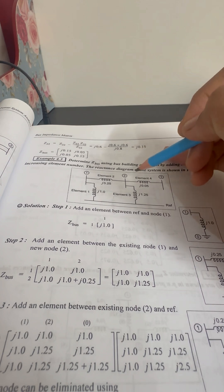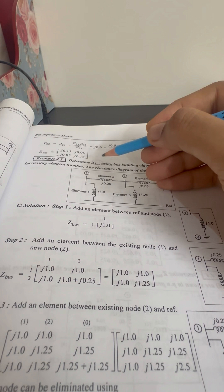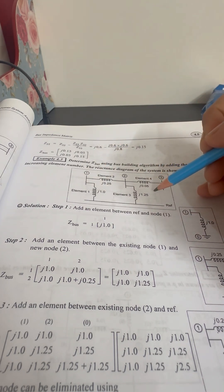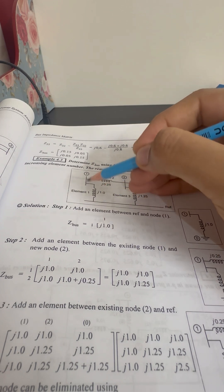This is very easy. In the Bus Building algorithm, there are 4 cases. We can see these 4 cases in this problem. The question is, find the Z-Bus by using the Reactance Diagram. The first step is, you have to consider the Reference Bus and the Bus 1.